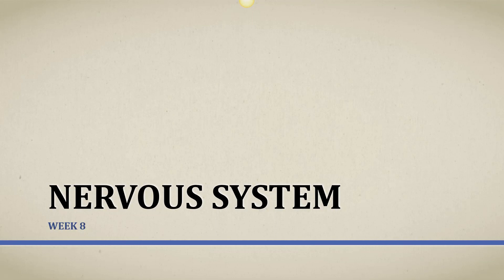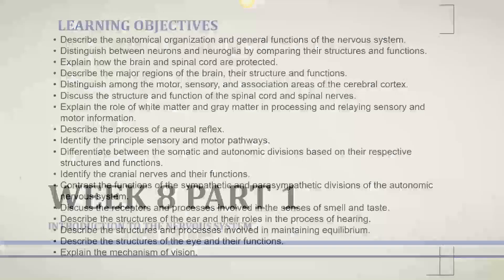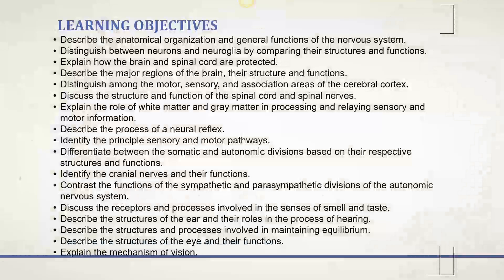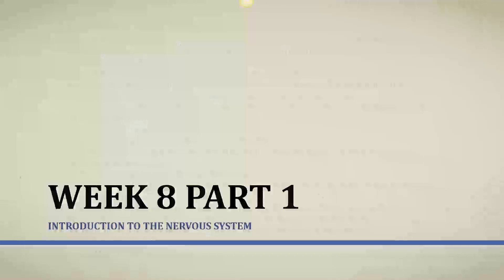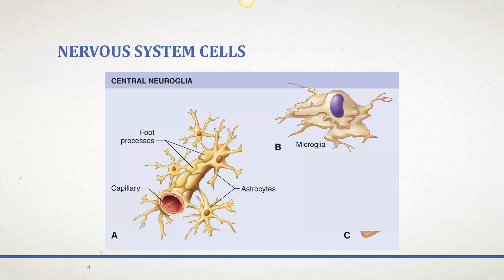This lecture is going to give you an introduction to the nervous system. Here's a list of our learning objectives, and this is all the stuff that we get to cover in this course. This first part is just a basic introduction to some of the cells of the nervous system.